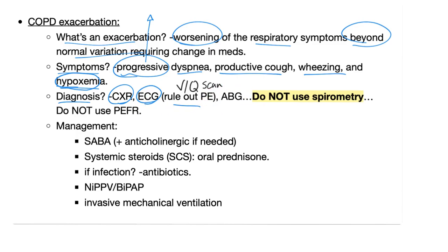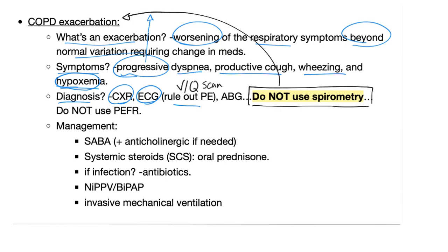Do not use spirometry to diagnose a COPD exacerbation — we don't have time for pulmonary function testing. Do not use PEFR — peak expiratory flow rate — or the flow-volume loop for this purpose.